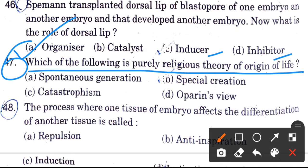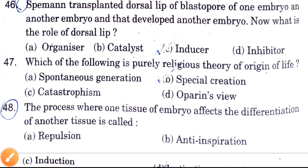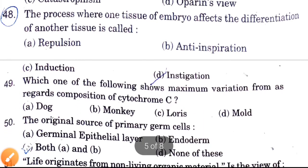Which of the following is a purely religious theory of the origin of life? Options are spontaneous generation, special creation, catastropism, and Oparin's view. The answer is special creation — the theory of special creation.